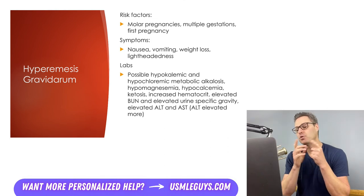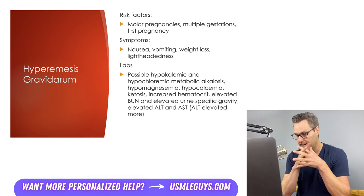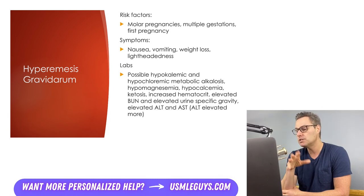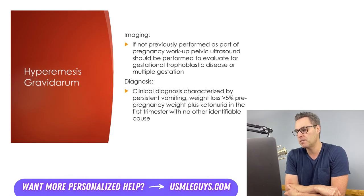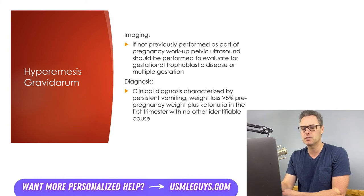Dehydration can lead to an increase in hematocrit. Remember, there's usually a physiologic anemia of pregnancy with greater plasma volume compared to red blood cell mass, so even if hematocrit is in the normal range for a non-pregnant patient, it can represent dehydration and hemoconcentration. Dehydration can also result in elevated BUN and elevated urine-specific gravity. Liver transaminases may be slightly elevated, with ALT usually slightly more elevated than AST. A pelvic ultrasound should be performed to evaluate for gestational trophoblastic disease or multiple gestation. The diagnosis is made when in the first trimester the patient has persistent vomiting, weight loss of more than 5% of pre-pregnancy weight, plus ketonuria, and no other identifiable cause.